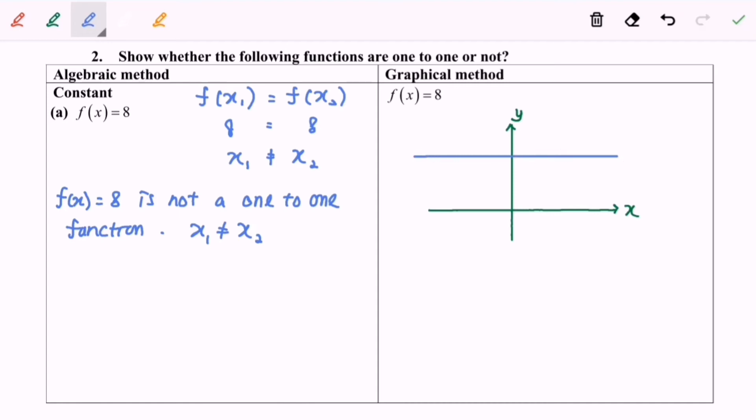Then we have to name it f(x) equals eight. Since we are using the graphical method, we need to draw a line that is parallel to the x-axis, which is another horizontal line.